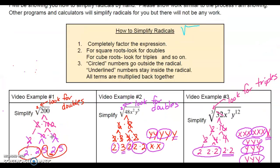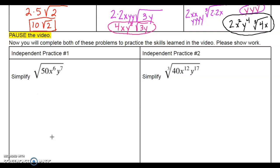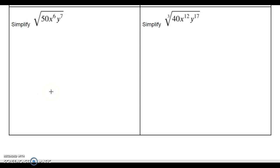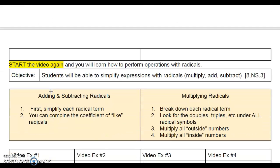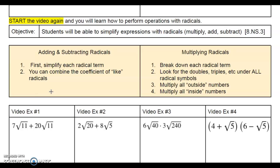Pause the video and complete the two practice problems. We are now going to work on the next section from unit one: operations with radicals. There are two different operations — adding and subtracting, and then multiplying. When you add and subtract, first you want to simplify the radicals.